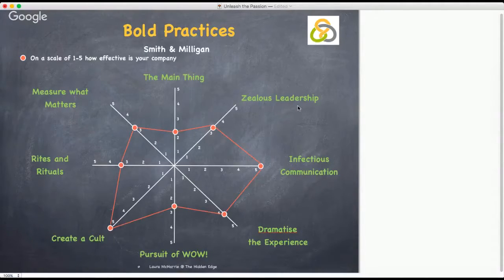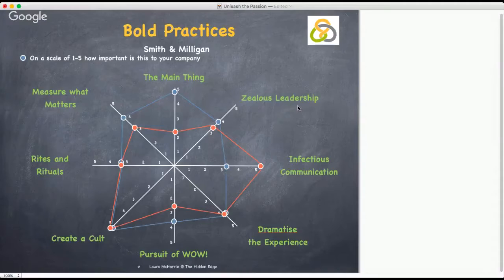So measure yourself under those eight aspects. On a scale of one to five, with five being fab and one being not so, how effective is your company? And on a scale of one to five, how important is this to your company? Or you can download the free Bold Practice app from Apple and it will create your profile for you, compare it with the bold brands and other companies in their database, and suggest tactics that you can use to improve your performance and links to appropriate chapters within their book to guide you.